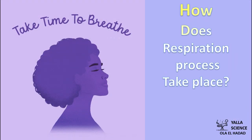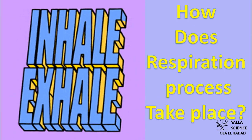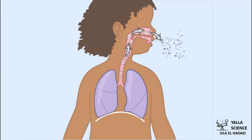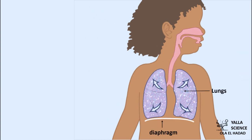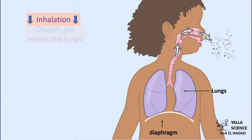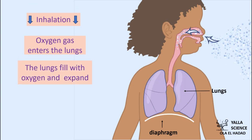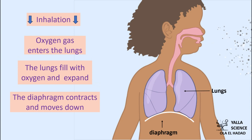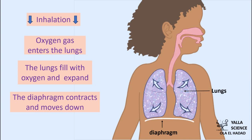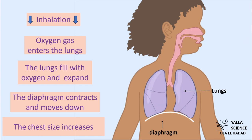How does the respiration process take place? The respiration process includes inhalation and exhalation. During inhalation, when you breathe in, oxygen gas enters the lungs. The lungs fill with oxygen and expand. They need more space to expand, so the diaphragm contracts and moves down, and the chest size increases.